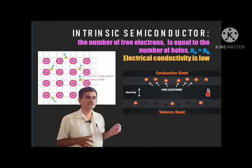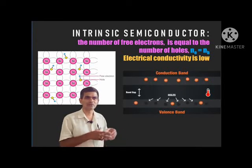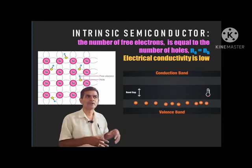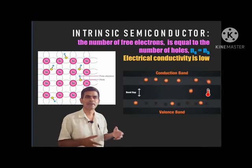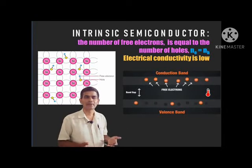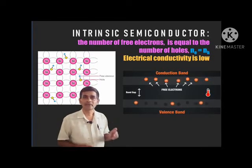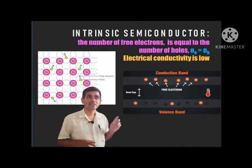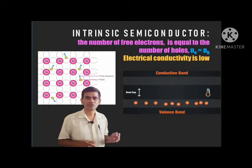Some number of holes are created because of breaking of covalent bonds. As a result, few electrons are also available in the conduction band and few holes are available in the valence band. In an intrinsic semiconductor, the number of electrons is always equal to the number of holes.